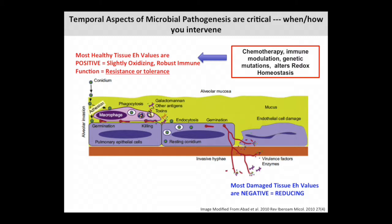In a healthy patient who doesn't get Aspergillus or Fusarium, our tissue is slightly oxidizing and our immune system is fully functional — it needs this environment to provide the antimicrobial response to control these infections. However, when you get an invasive fungal infection, the redox environment drops dramatically, primarily due to a reduction in oxygen levels at the site of infection. Our medical interventions do this naturally — whether it's cyclophosphamide, cyclosporine, or the newest immunosuppressive antibody.